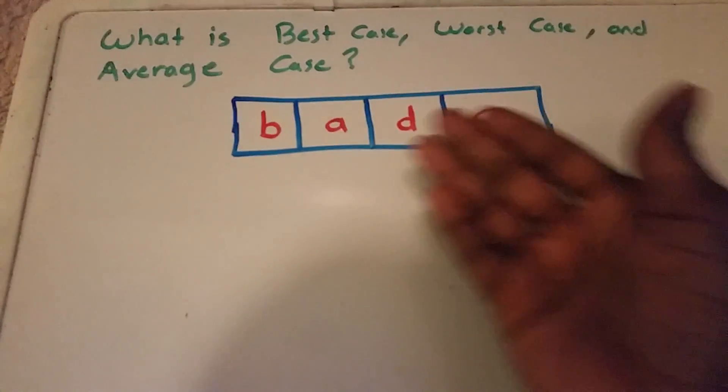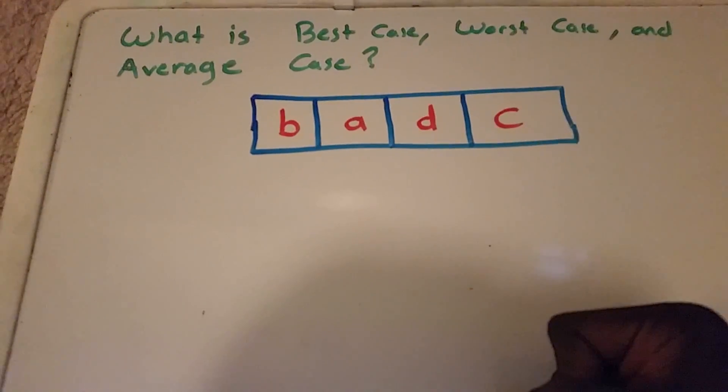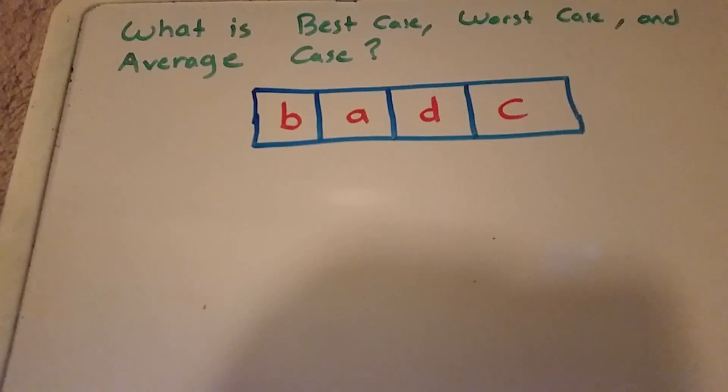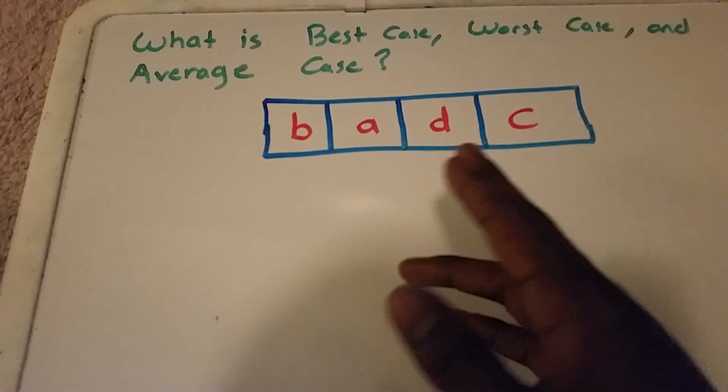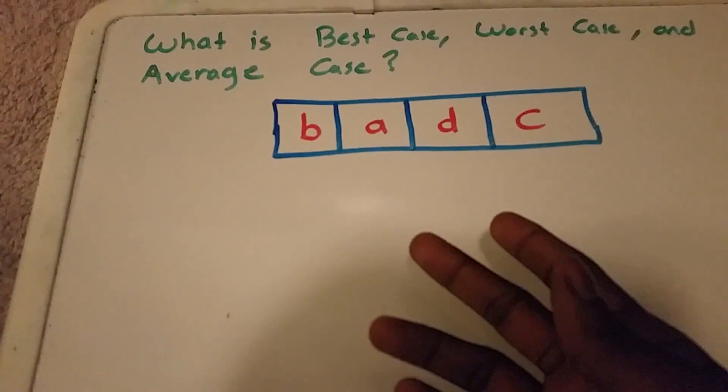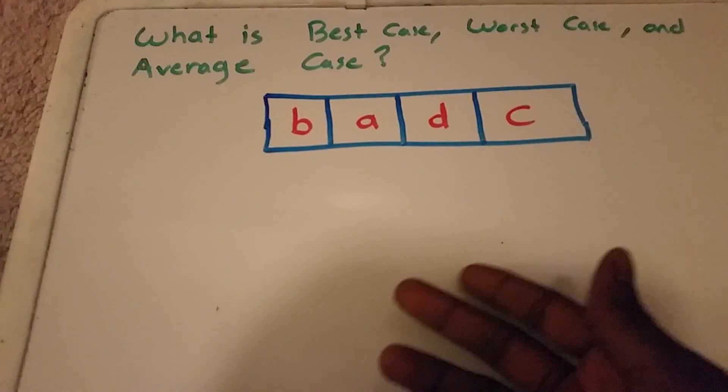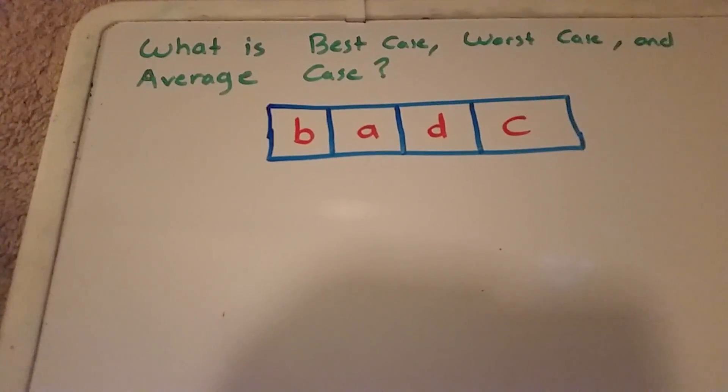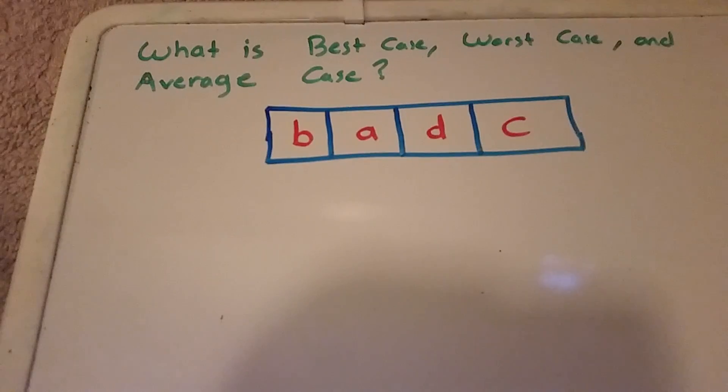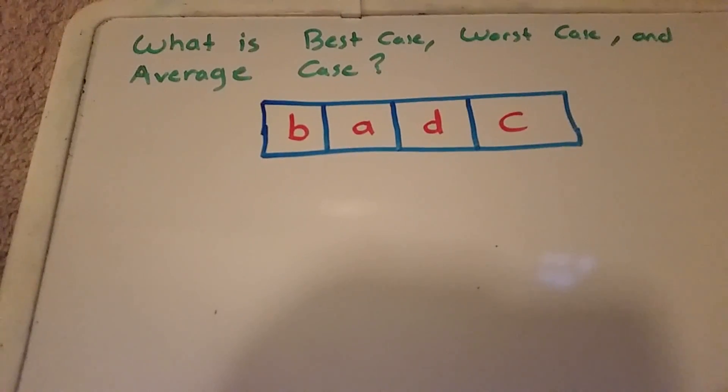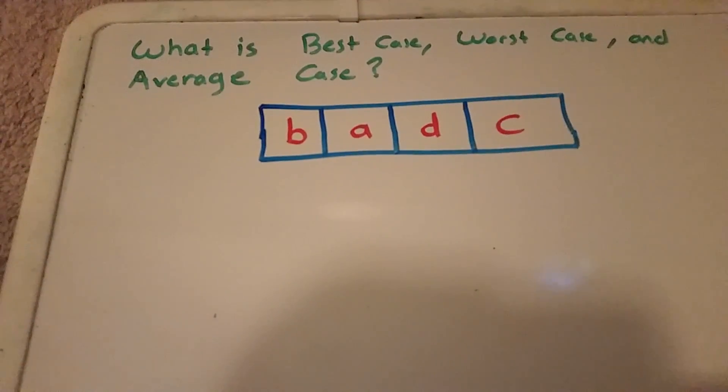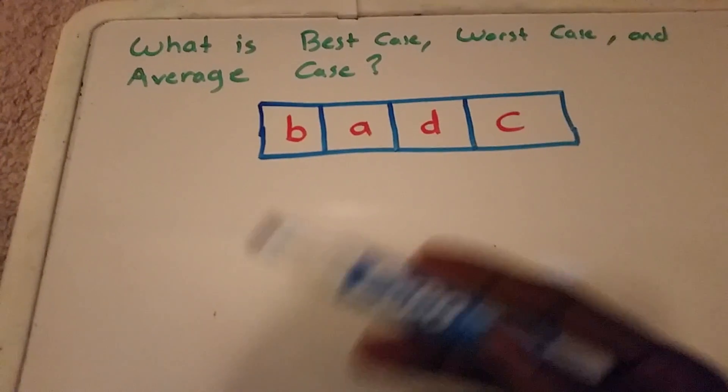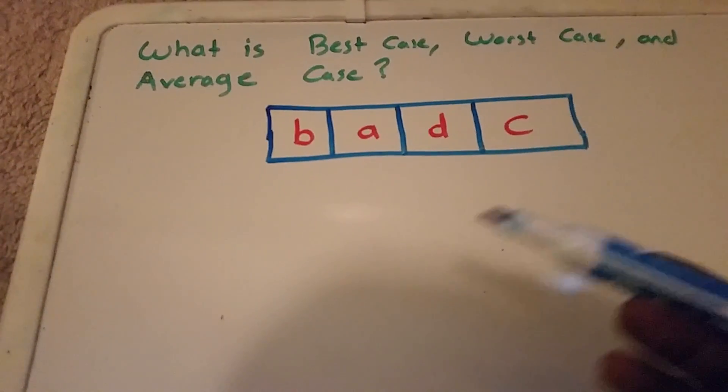So here I have a simple array or list of letters and we want to arrange them in alphabetical order. So it would be good to understand, what's the best case for me to rearrange these into alphabetical order?